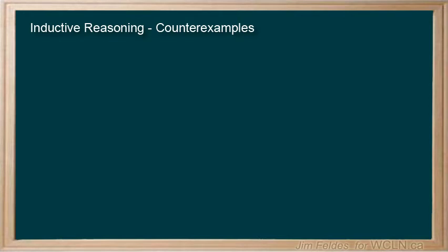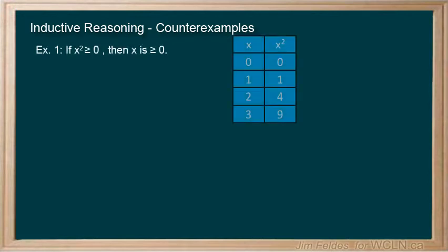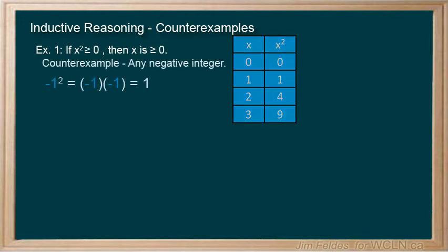Here are a few examples for you to consider and try to find counter-examples that prove the pattern false. The first one, the inequality x squared is greater than or equal to zero, we make the conjecture that all x's are greater than or equal to zero, as shown in the table. Can you come up with an exception? Since the product of two negative numbers is positive, any negative number would be a counter-example.